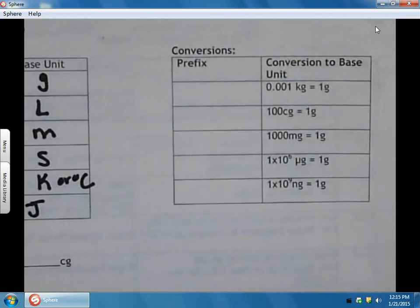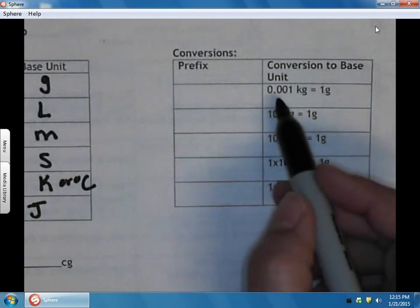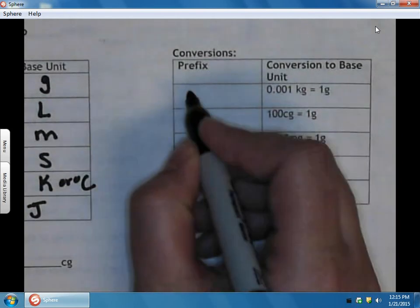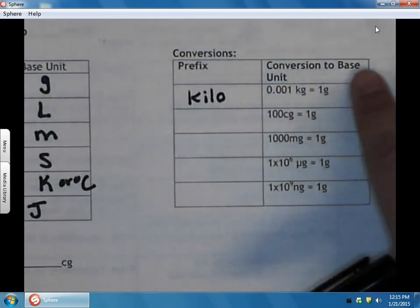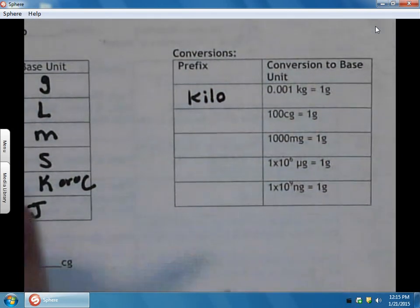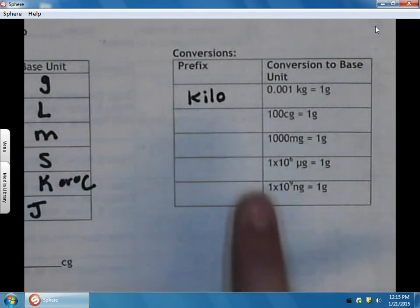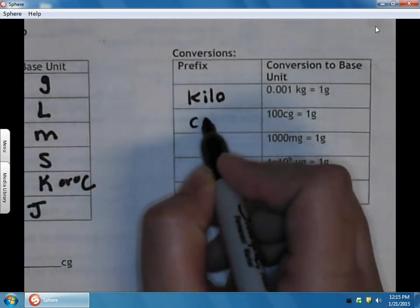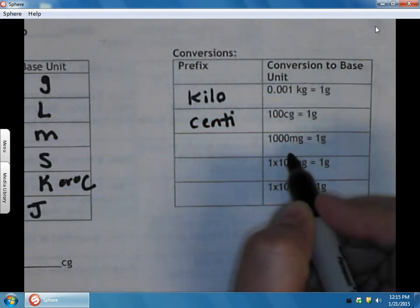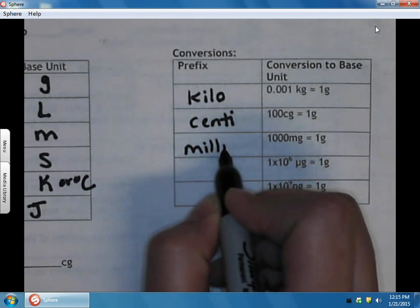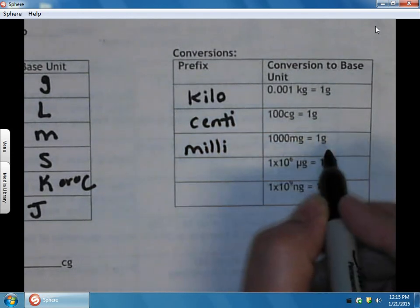Our main focus today is going to be on converting, and there are only really five conversions you need to learn. The first one is kilo: 0.001 kilograms equals 1 gram, and that comes from the prefix. Of course, these grams we can interchange with any of the base units. Centi means 100, so there's 100 centigrams in 1 gram. Milli means 1,000, so there's 1,000 milligrams in 1 gram.